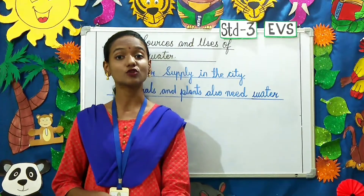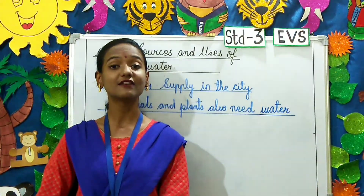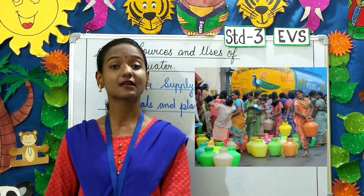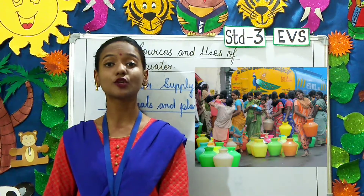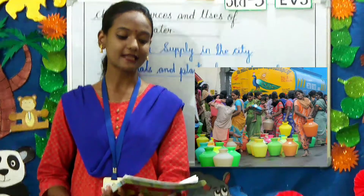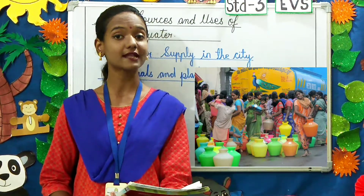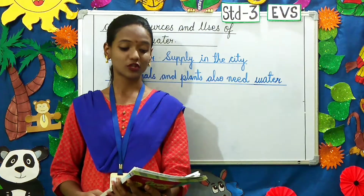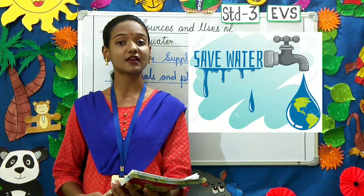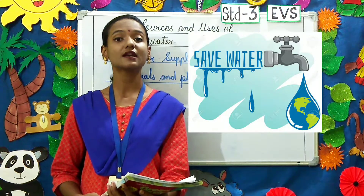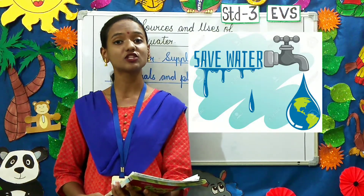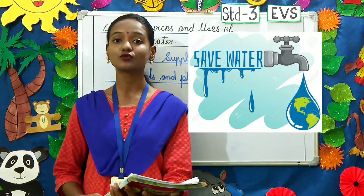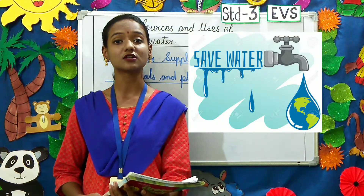Have you wondered how the people living in slums get water? The people living in slums get water by standing in long queues — queues means lines — to get a bucket of water from the water tanker. So children, always remember, we need to save every drop of water. There are many people and animals out there who don't have proper water to drink.